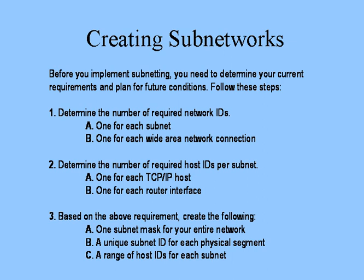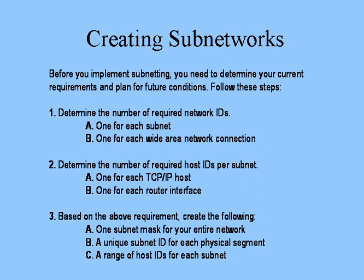Step number two: determine the number of required host IDs per subnet — one for each TCP/IP host and one for each router interface. Now based on that criteria, I should be able to create one subnet mask for our entire network, a unique subnet ID for each physical segment, and a range of host IDs for each subnet.